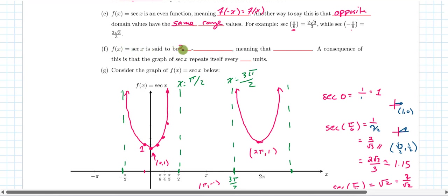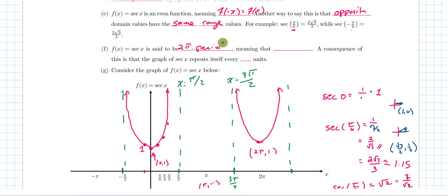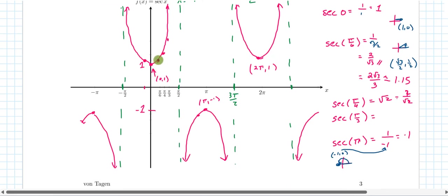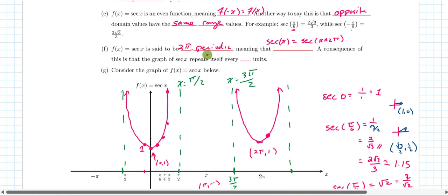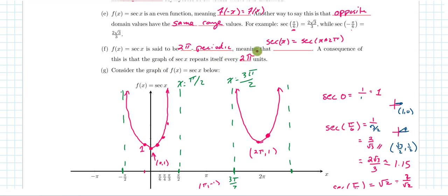The secant function is 2π-periodic, meaning sec(x) = sec(x + 2π). A domain value exactly 2π away from another outputs the exact same range value. For instance, sec(π/6) and sec(13π/6) — which is exactly 2π away — give the same output. As a consequence, the graph of sec(x) repeats itself every 2π units.